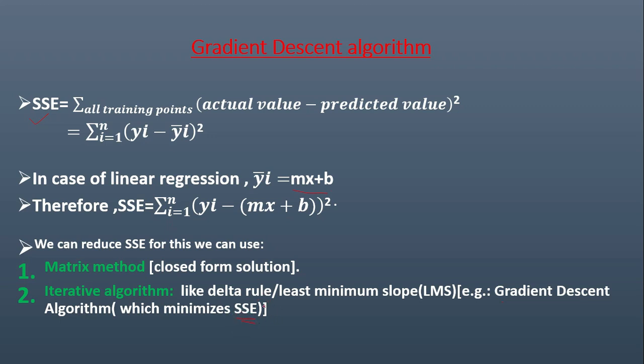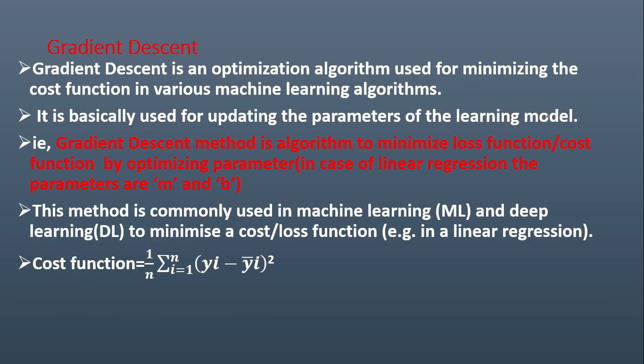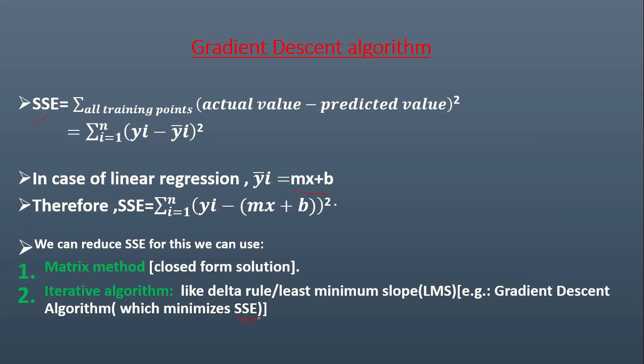Now, how can you reduce this SSE using gradient descent algorithm? This gradient descent algorithm will minimize this SSE by iteratively updating the parameters of the learning model. Which are the parameters in case of linear regression? It will be m and b. That is, you are going to update or you are going on finding new values of m and b.